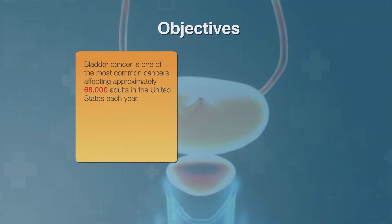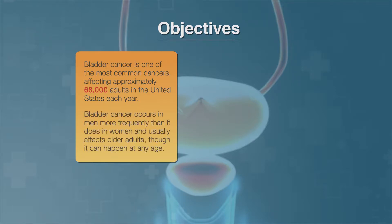Bladder cancer is one of the most common cancers, affecting approximately 68,000 adults in the United States each year. It occurs in men more frequently than in women, and usually affects older adults, though it can happen at any age. Although it is most common in the bladder, this same type of cancer can occur in other parts of the urinary tract drainage system.